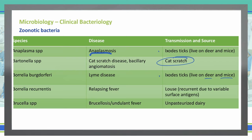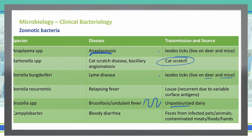Brucella species causes brucellosis and undulant fever. Remember that undulant fever is characterized by a spike of fever back down, spike of fever back down — up and down, up and down — and this is due to unpasteurized dairy. Campylobacter causes bloody diarrhea, transmitted through feces from infected pets or animals, as well as contaminated meats, foods, and hands.